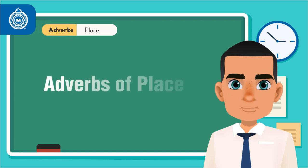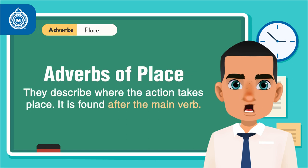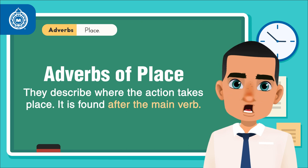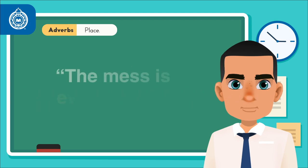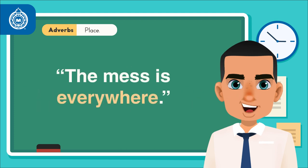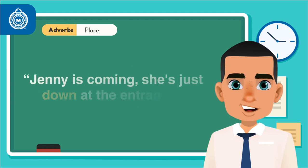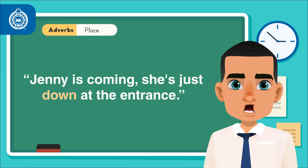Adverbs of place. They describe where the action takes place. It is found after the main verb. For example: The mess is everywhere. Jenny is coming — she is just down at the entrance.